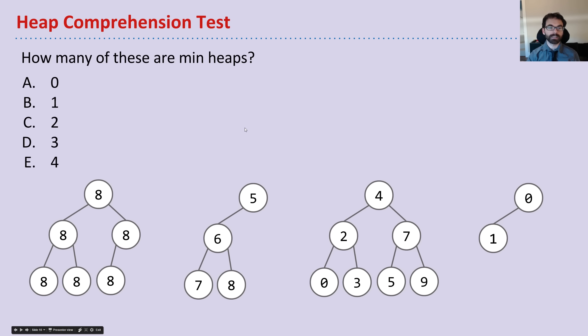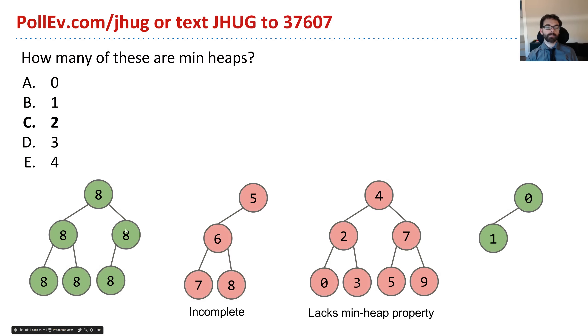Now to make sure that all makes sense, I'd like you to think about how many of these trees are min heaps, and I'll give you guys a little bit of a chance to think about this. So this first one, totally heap, right? It has duplicates, but every item is less than or equal to its child, and it is also complete.